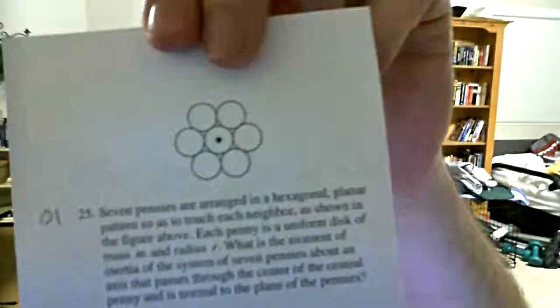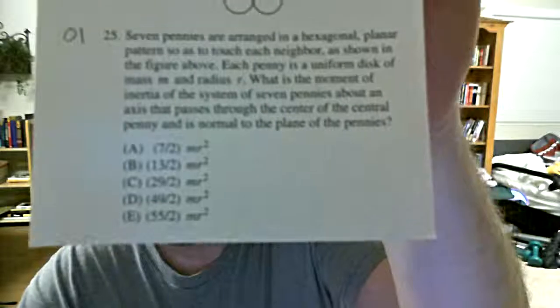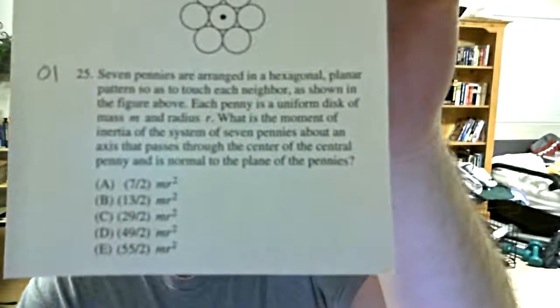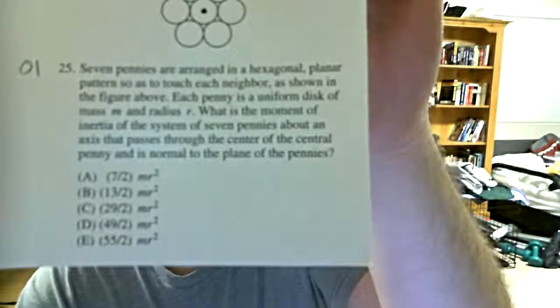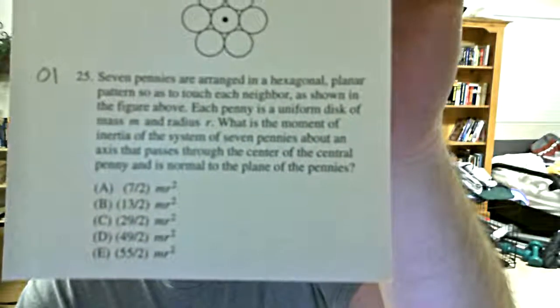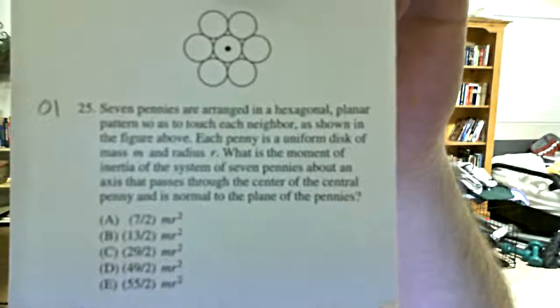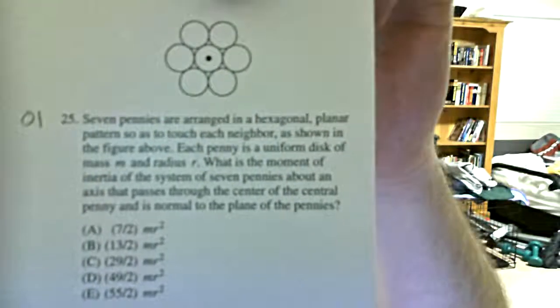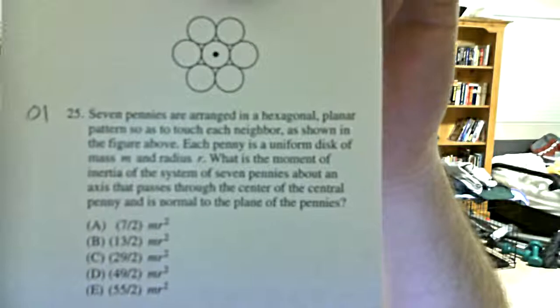As usual, glance at the answers. Nothing too remarkable about the answers, MR squared and fractions. I can't really gather anything from the answers as far as glaring differences or anything like that. So quick glance at the diagram, then right into the problem.